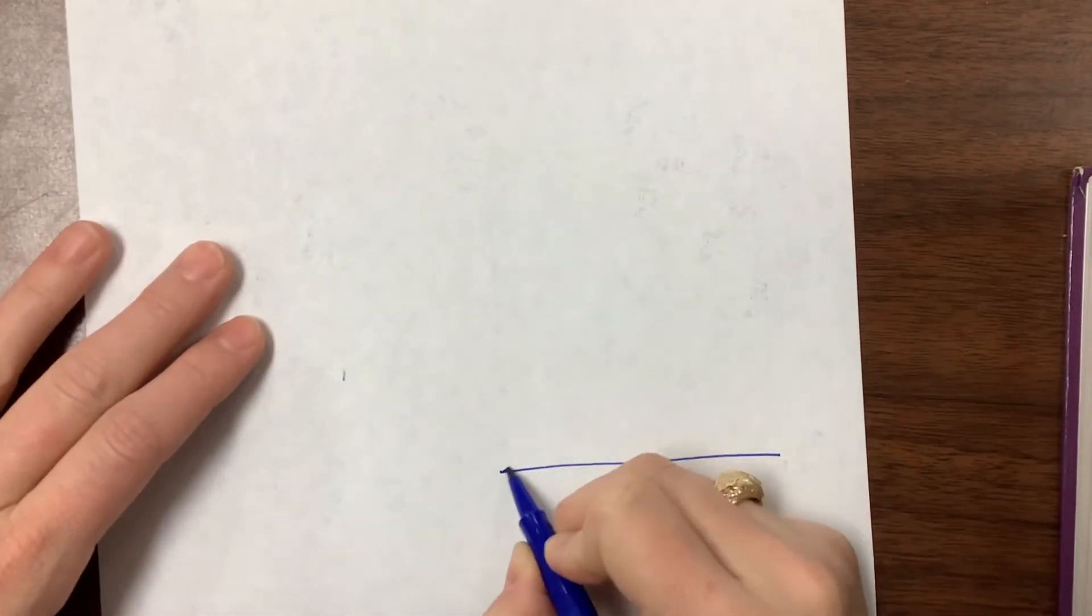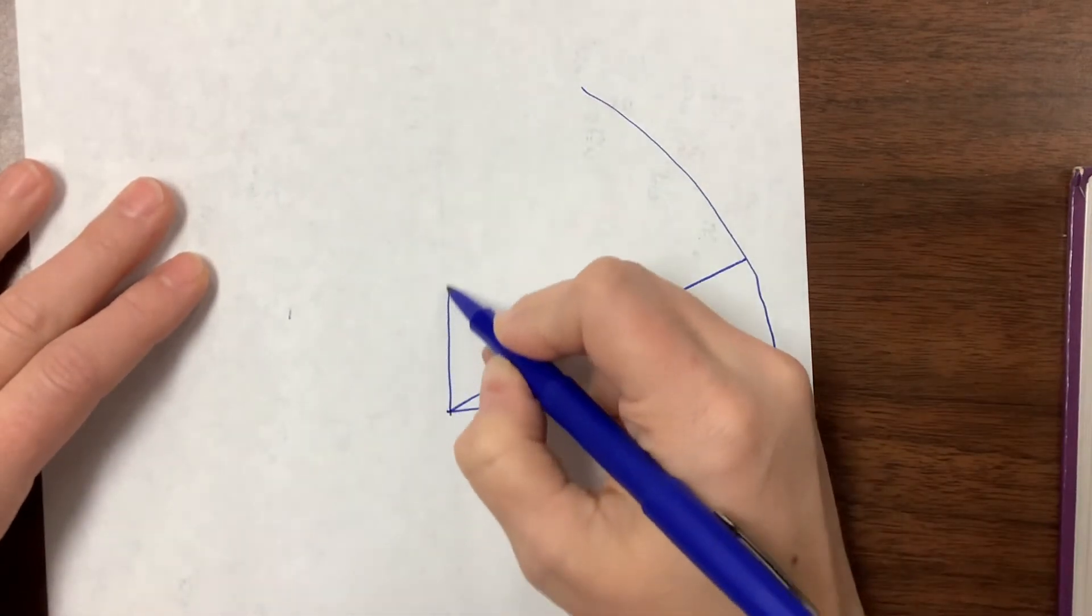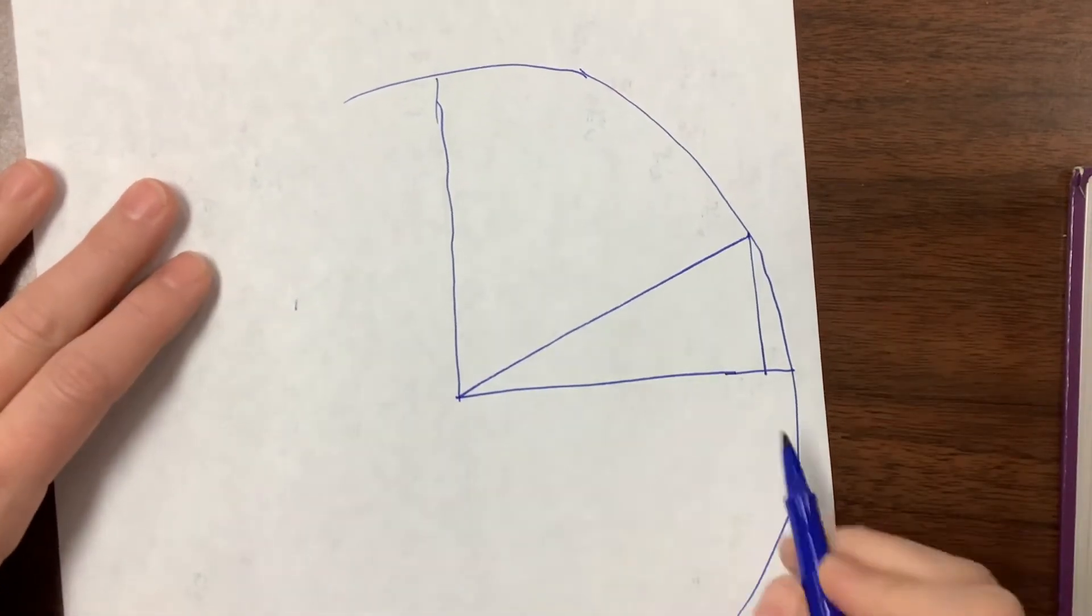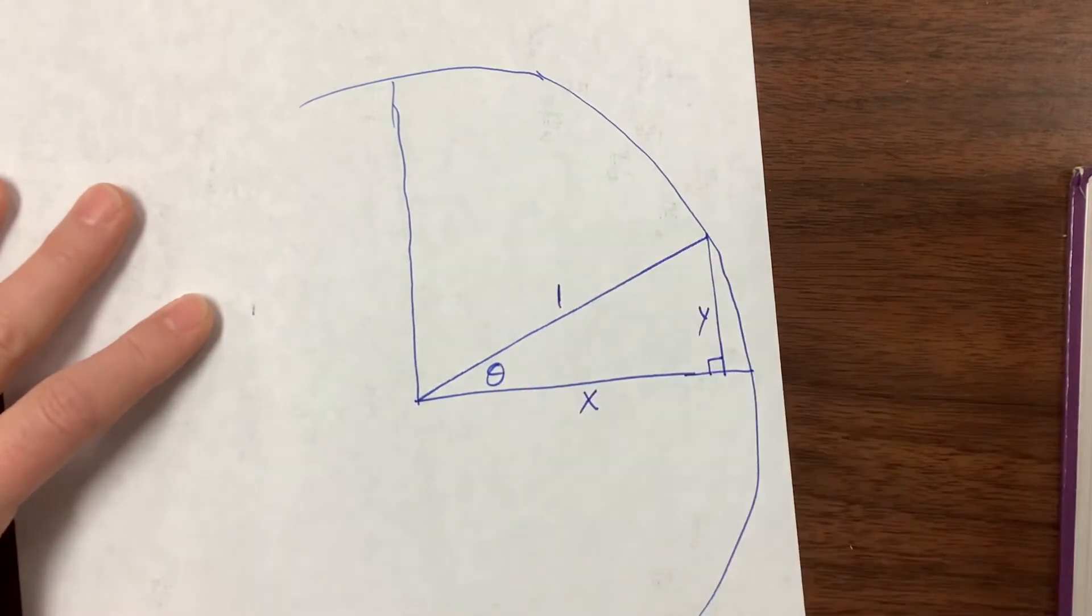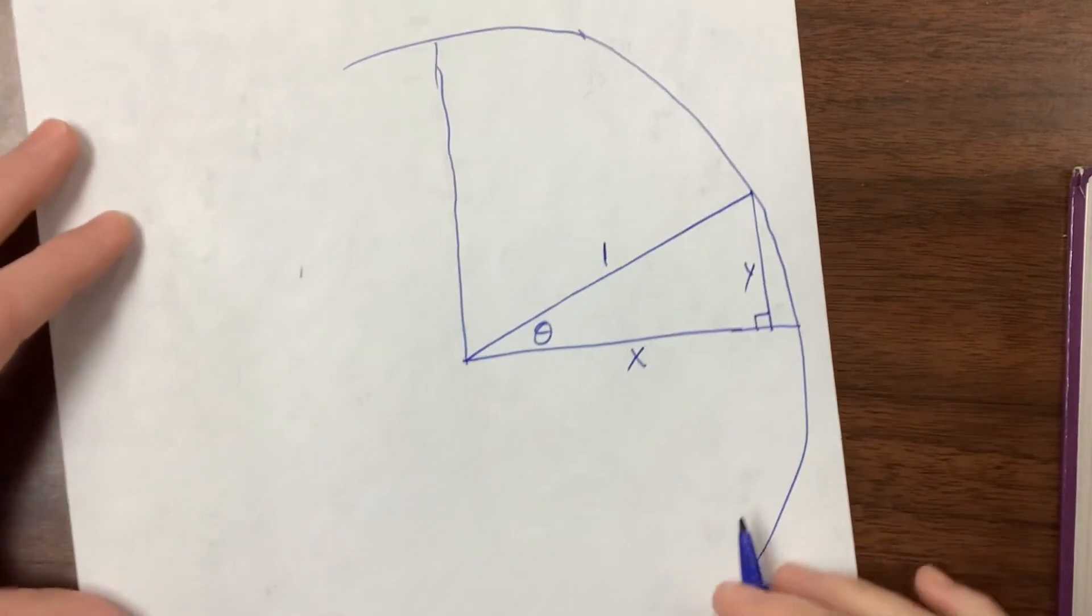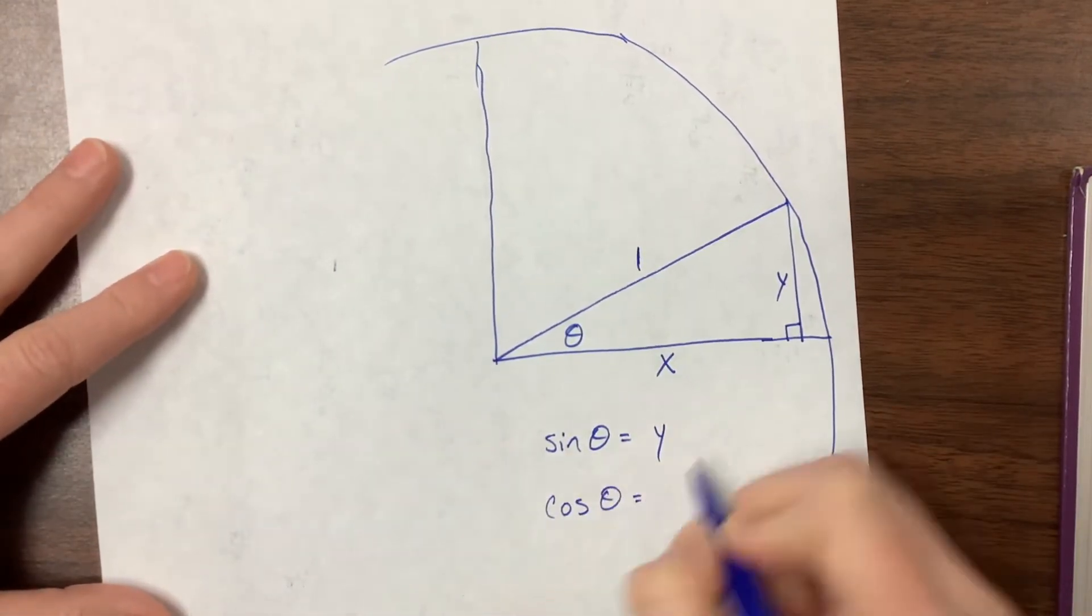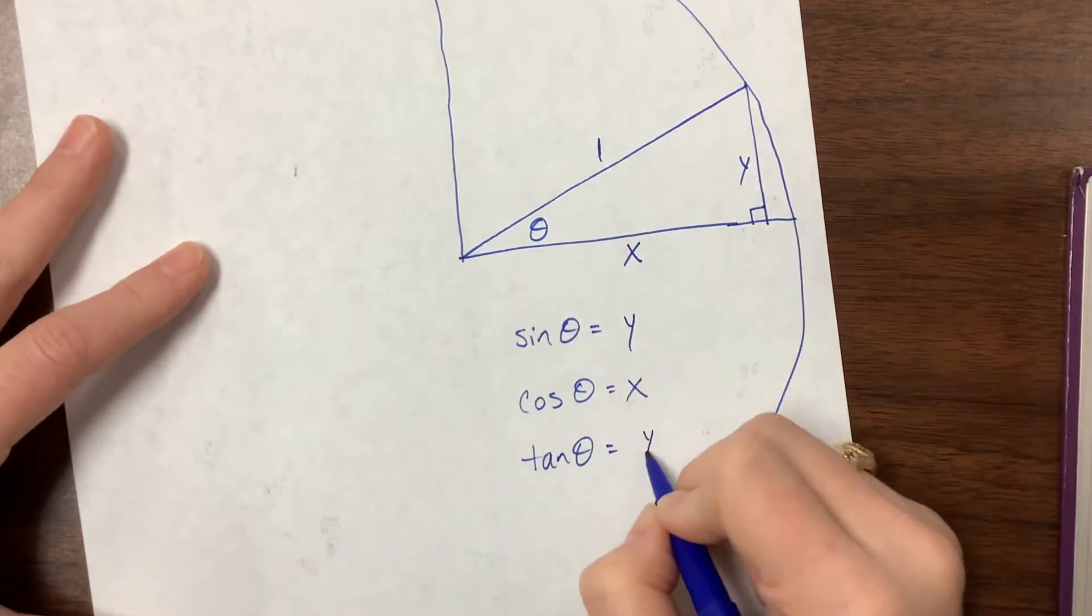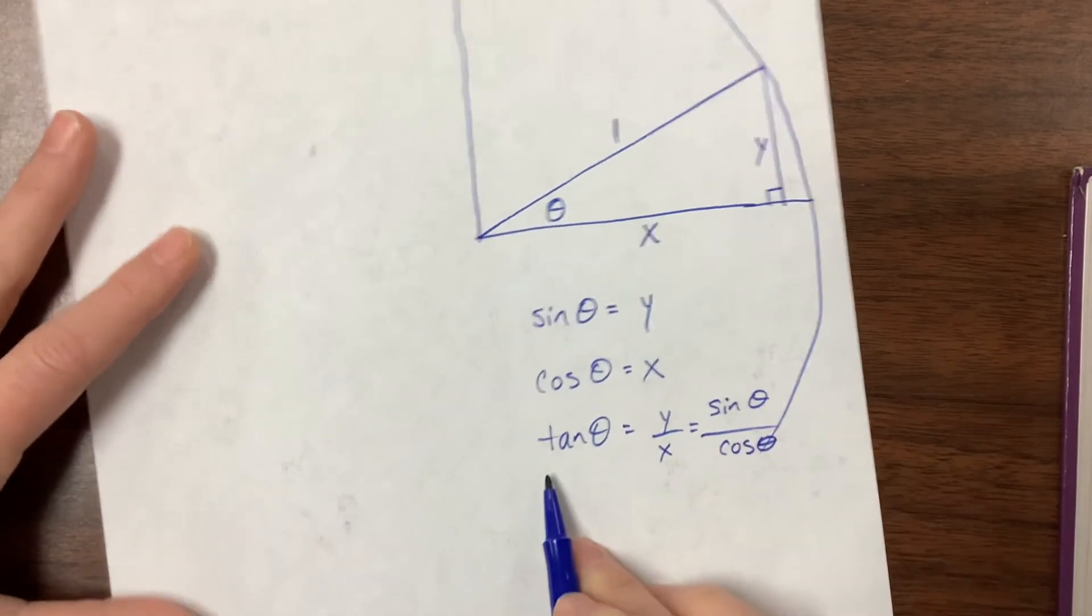Now the question is: why do we care? If this is my angle theta, this is my x value, this is my y value, and my hypotenuse is always one. What happens here is that sine of theta equals y over 1, which is just y. Cosine of theta equals x over 1, which is just x. Tangent of theta equals the opposite over adjacent, y over x, or we might say sine over cosine. We know that tangent equals sine over cosine.